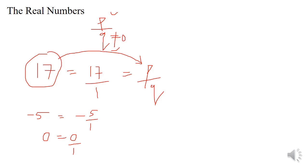Now, if we plot all the rational numbers on the number line, we can see that the number line will not be completely filled. There will be gaps in the number line, and these gaps will be occupied by numbers which cannot be expressed in the form P by Q — that is, numbers which are not rational numbers.